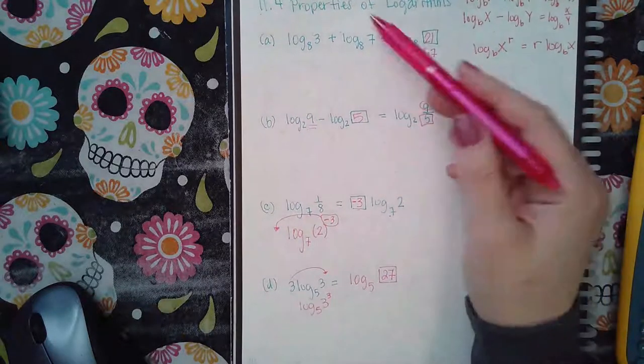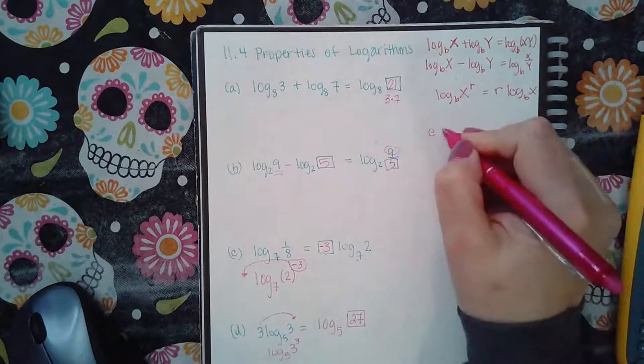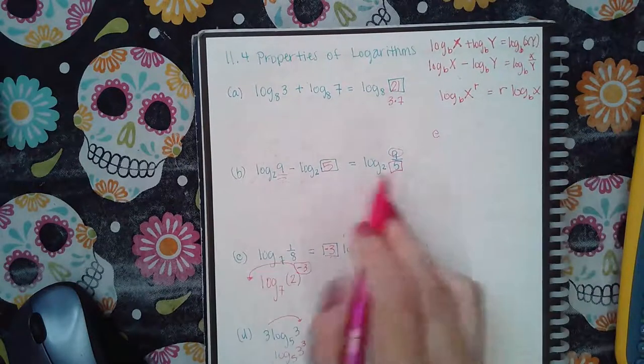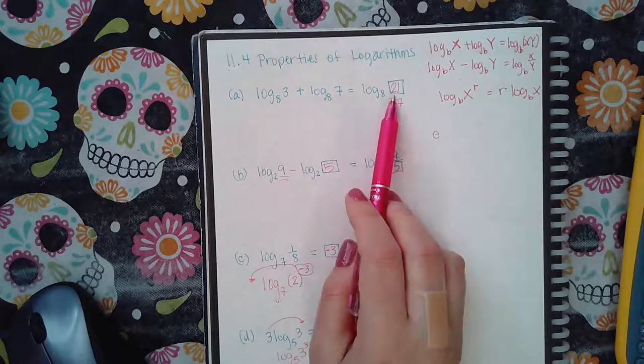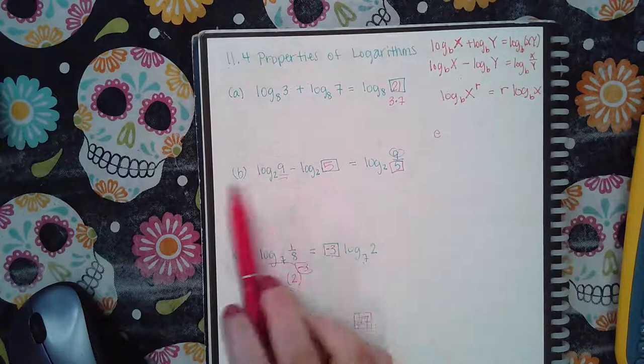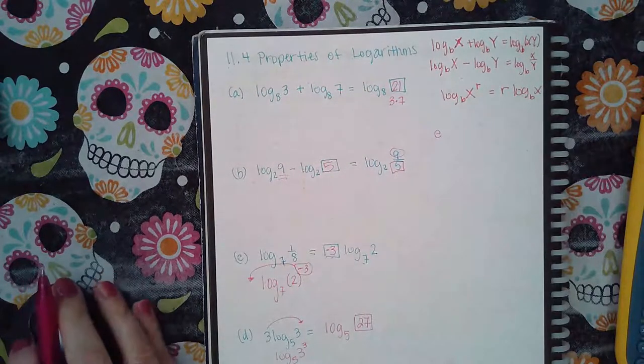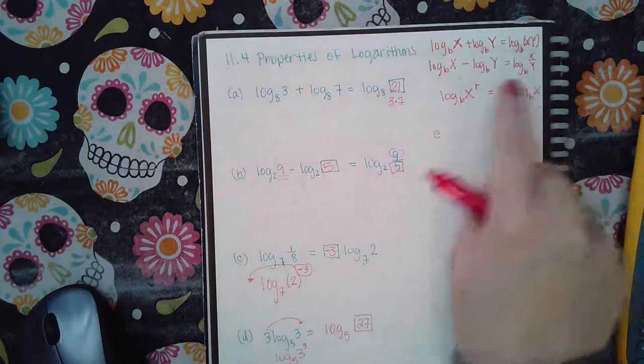It could also go in either direction for these two. You may see one that already has the multiplication here and then you have to figure out what the two values are. So it does go in both ways. Make sure that you're able to use these properties in both directions.